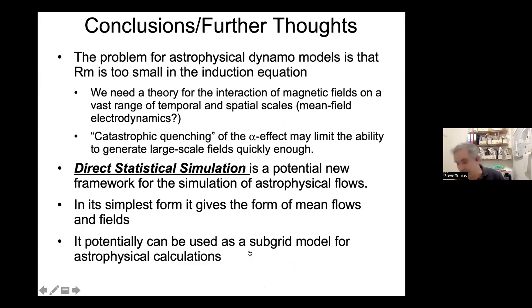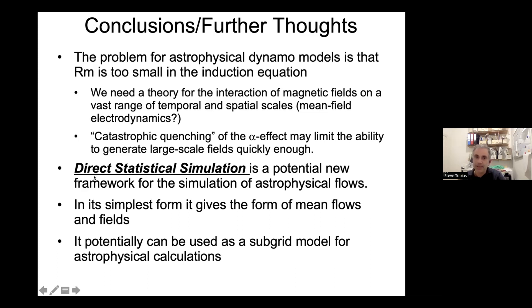To finish: hopefully I've given you a brief review of the problems we're trying to explain using astrophysical dynamo theory. The key problem for astrophysical dynamo models is that we can't get to high enough magnetic Reynolds number in the induction equation — we really need a theory for the interaction of magnetic fields over a vast range of temporal and spatial scales. Mean field electrodynamics was that theory, but I'm not certain it's good enough because of catastrophic quenching. Direct statistical simulation, which I showed at the end, is a potential new framework: in its simplest form it gives the mean flows and mean fields that mean field electrodynamics would also give, but it can potentially be used as a sub-grid model for astrophysical calculations.